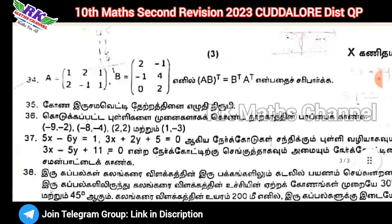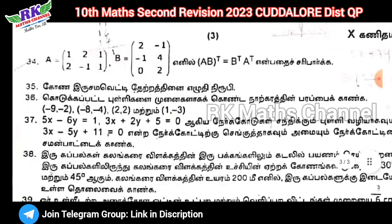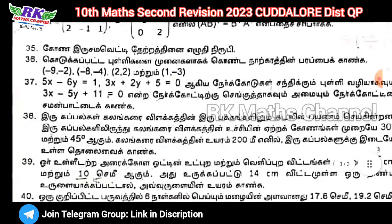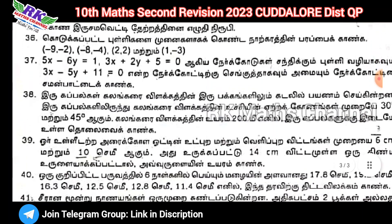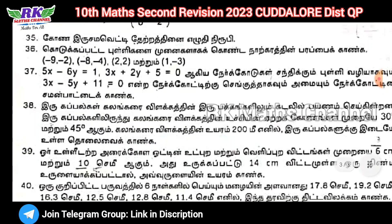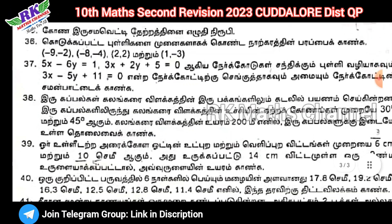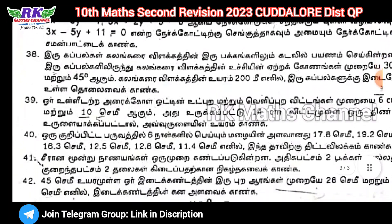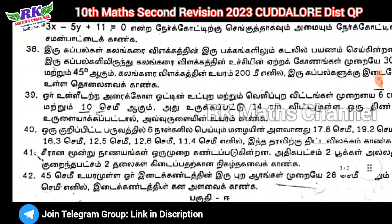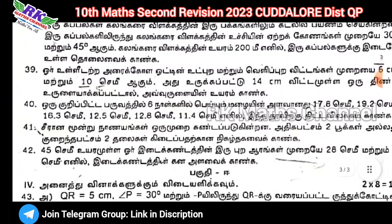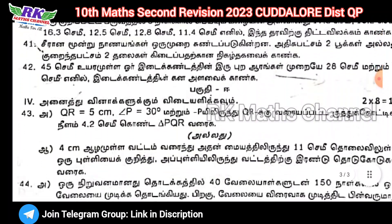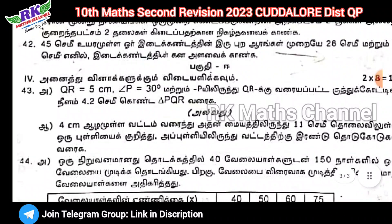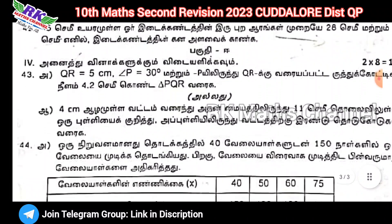PDF link is in the description — download it. Question number 37 is the 5-mark question. It is from the book, and now we will go to the next part.